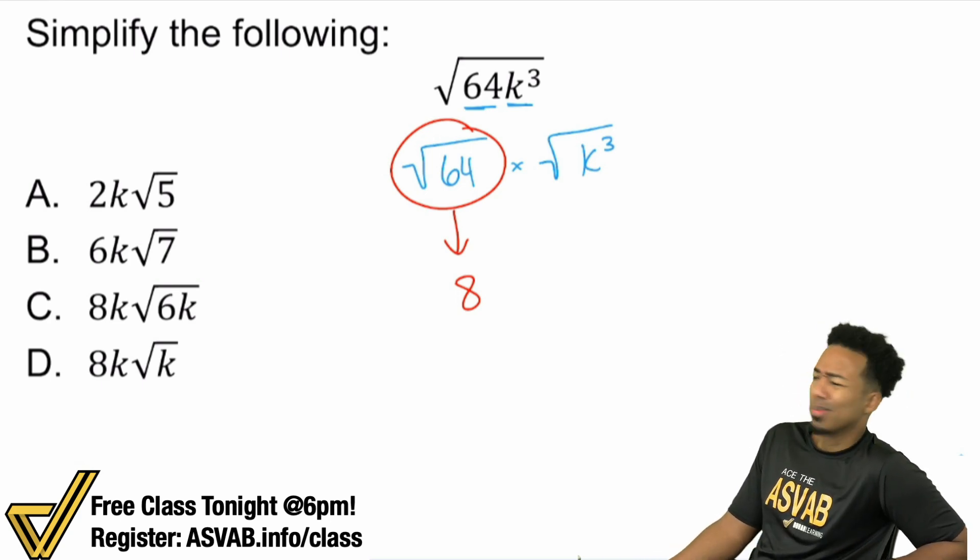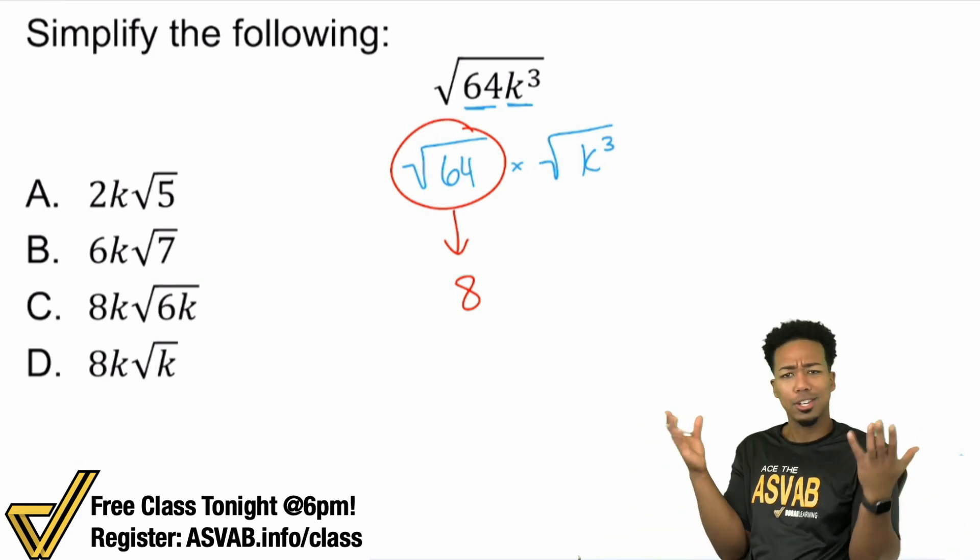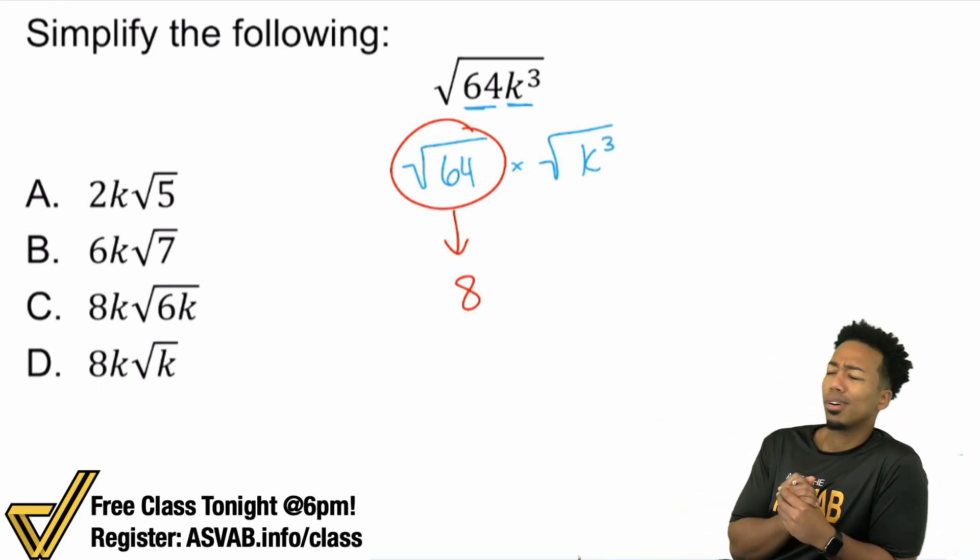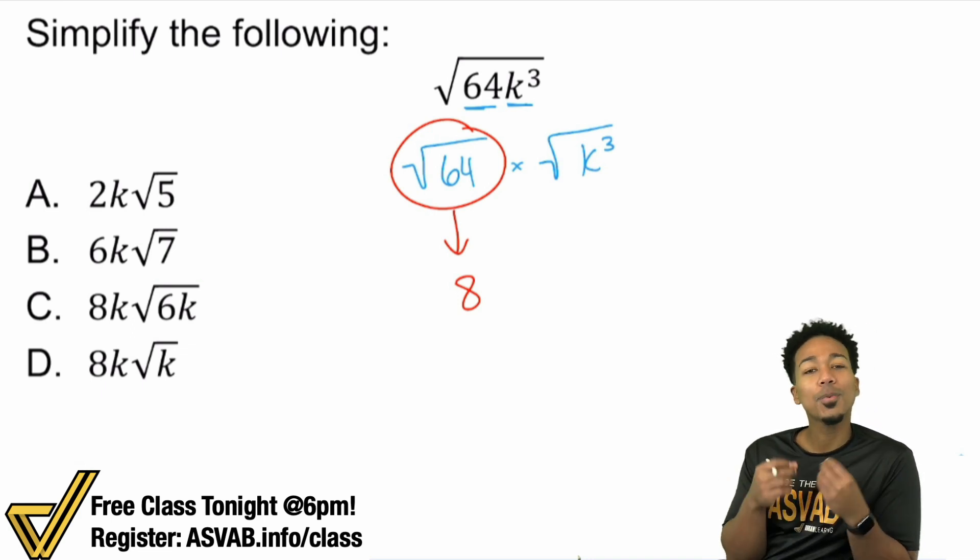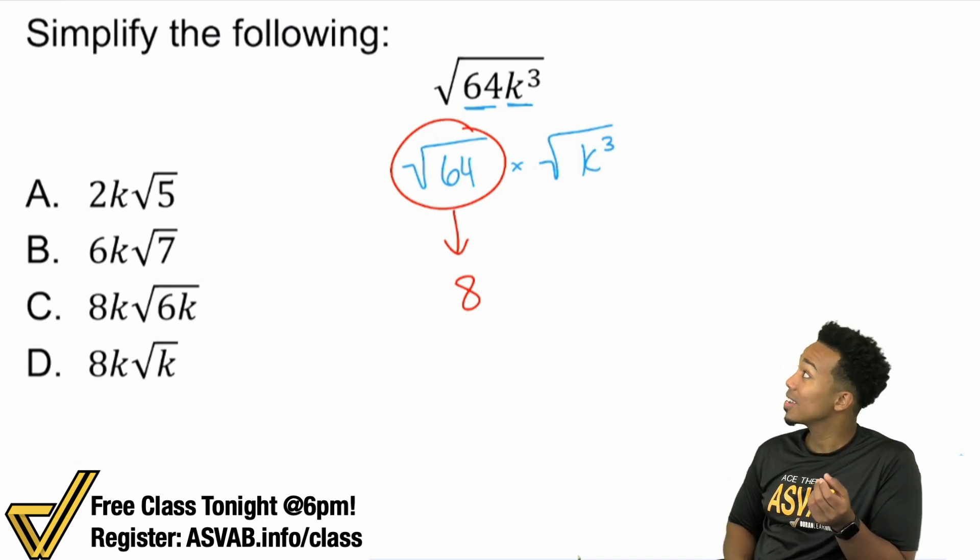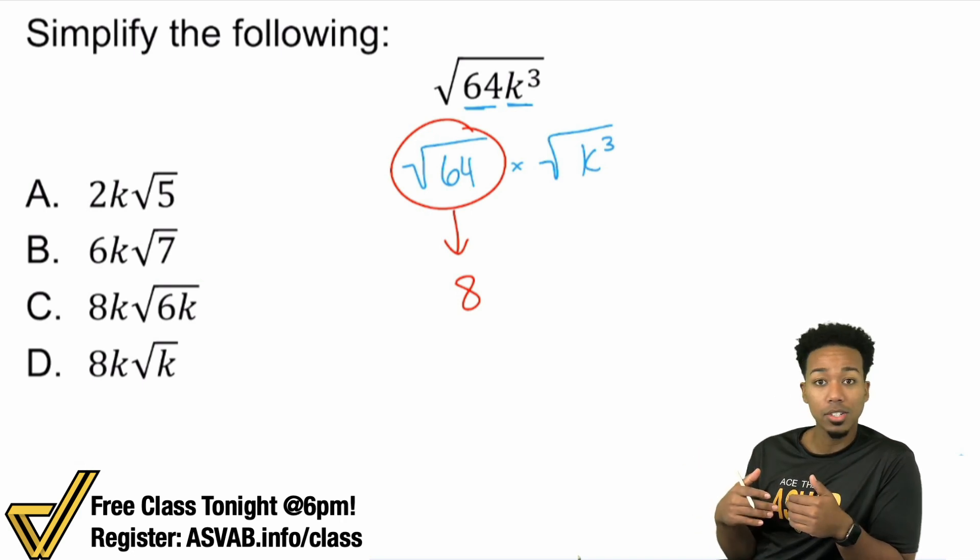So what about the k³? You know, cause coach, I knew 64 goes down to eight, I knew that, but what would I do with the k³?